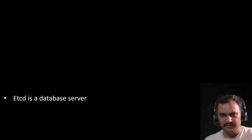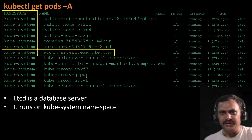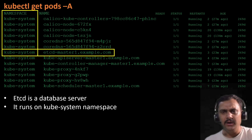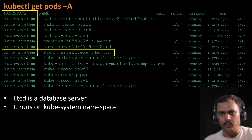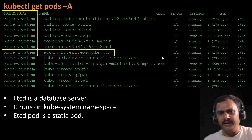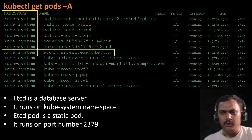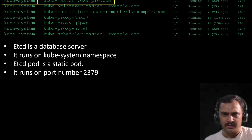etcd is the database server. It runs on the kube-system namespace. If I execute the command kubectl get pod -A, meaning all namespaces, you will observe that the namespace is kube-system and the name is etcd-master1.example.com. The etcd port is a static pod and it runs on port number 2379.